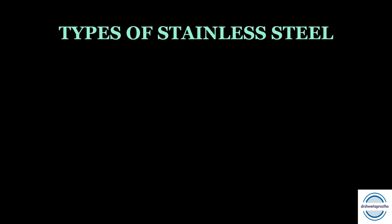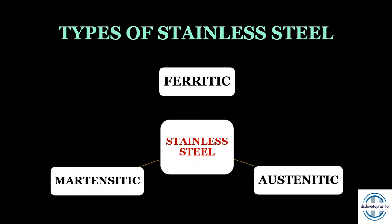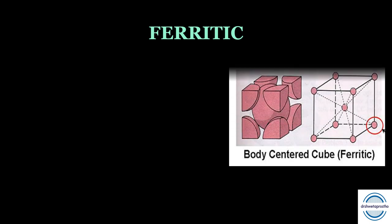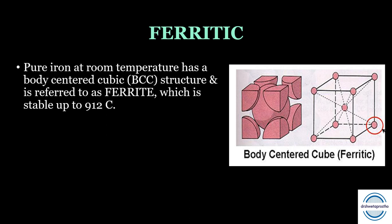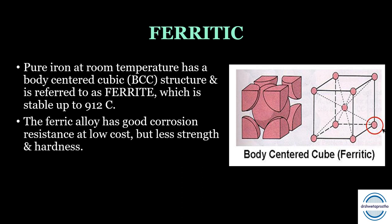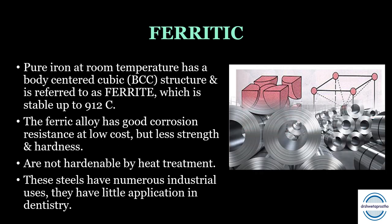There are three main types of stainless steel based on crystal structure — the lattice arrangement of iron: ferritic, martensitic, and austenitic. Ferritic stainless steel: pure iron at room temperature has a BCC structure called ferrite, stable up to 912°C. The ferritic alloy has good corrosion resistance at low cost but less strength and hardness, limiting its dental applications. It is not hardenable by heat treatment, as temperature changes induce no phase changes in the solid state, giving it numerous industrial but little dental application.